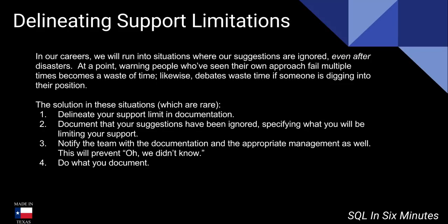Here's a solution in these situations — and again, these are very rare, only in companies with 50,000 or more employees with big environments. Number one: delineate your support limitation in documentation. If you've said there is a single point of failure in the system, that it's not enough to just backup and restore, that we cannot lose data, that we need an active-active model or transaction log backups, but you're being ignored — then document: 'I'm not going to support if there's another failure.' Document your suggestions which have been ignored, specifying what support you will be limiting. 'This particular database, which I have made warnings about, I will no longer be supporting.'